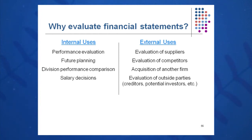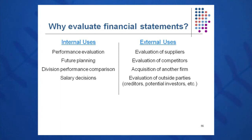If we have this net return on sales this past quarter, we can do it again next quarter — that kind of thinking goes on. We also look at comparing divisions: Division A versus Division B. Is one accretive to earnings, one not doing so well relative to the other? We look at this on a comparison basis inside the company, and also for salary decisions.